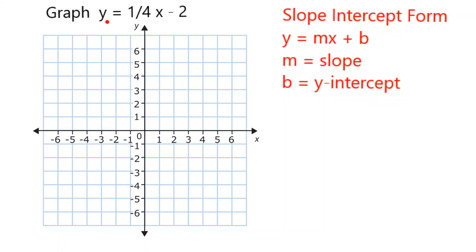The equation that we want to graph is in slope-intercept form because it can be written as y equals some coefficient times x plus some number. In this case, it would be like a negative 2. The m in this represents slope, and the b is the y-intercept. Therefore, this has a slope of 1 over 4 and a y-intercept of negative 2.